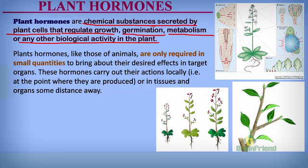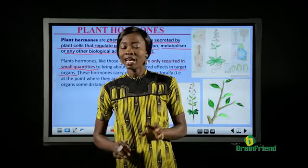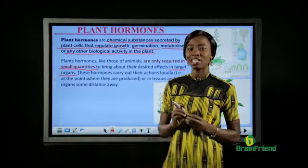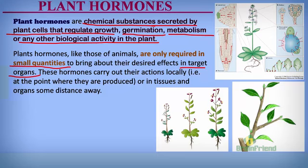What are the similarities between plant hormones and animal hormones? Like animal hormones, plant hormones are only required in small quantities to bring about their desired effect in target organs. Plant hormones may be secreted at one point — say at the tip of the stem — and can travel far within the plant. They are required in little amounts to cause desired effects. Plant hormones also carry out their action in target organs some distance away from the cells that produce them, or they can act locally within the cells that produce them.